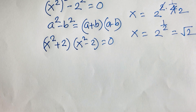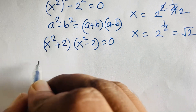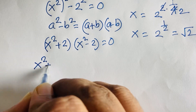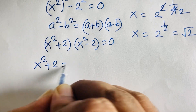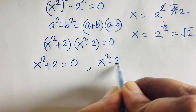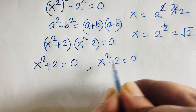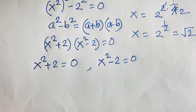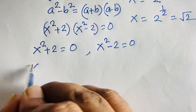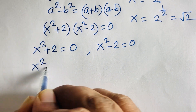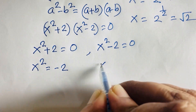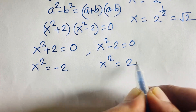There are two cases. Our first case is x squared plus 2 is equal to 0, and the other case is x squared minus 2 is equal to 0. So x squared is equal to minus 2, and x squared is equal to 2.